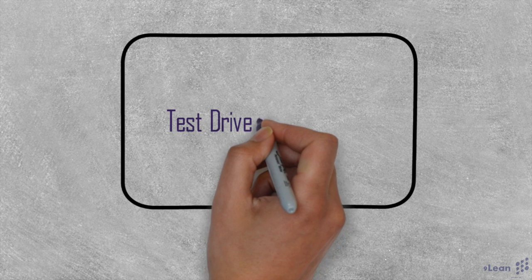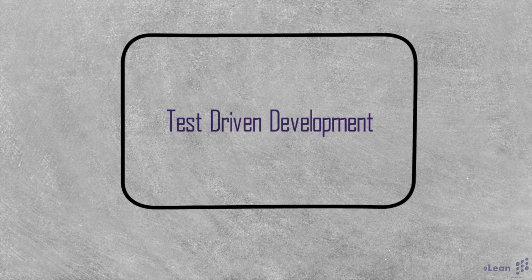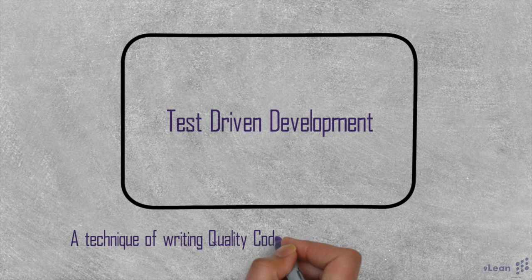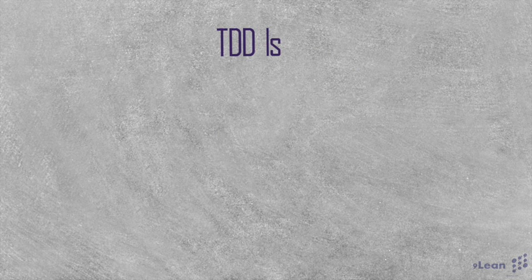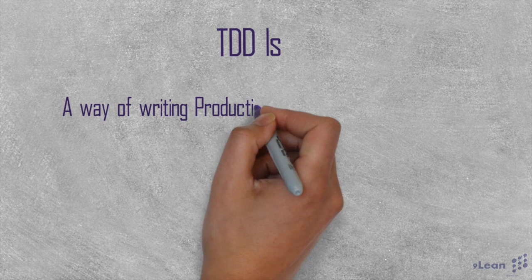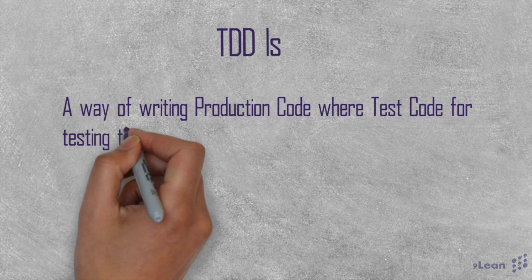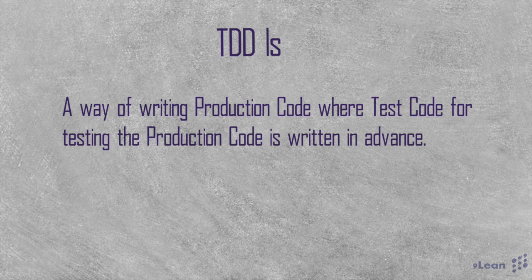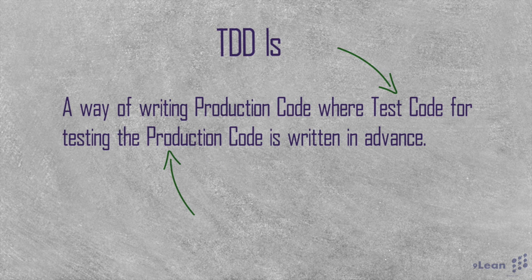Hi, in this video we are going to understand test-driven development, which is a way of writing quality code in software development. First, let's understand what TDD means. We can define TDD as a way of writing production code where test code for testing the production code is written in advance. To emphasize: we write test code for the production code, and we do it in advance.